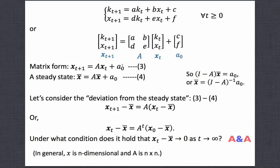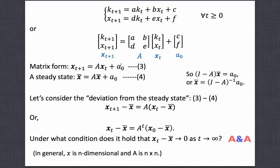Our dynamical system is expressed as bold x_{t+1} = A times bold x_t + A0. This A0 is a little ugly — this term makes the linear system non-homogeneous. Do you remember the trick from the first class to convert a non-homogeneous linear system into a homogeneous one? Instead of considering x itself, we consider its deviation from a steady state x-bar. The steady state satisfies x-bar = A times x-bar + A0. By subtracting this steady state equation from the original system, A0 disappears.